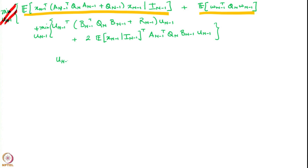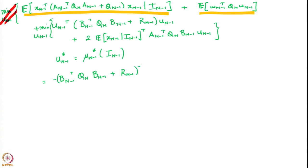That gives us that the optimal u_(n-1), let us call that u_(n-1)*, is a function mu_(n-1)* of the information i_(n-1), and is given by the negative of (B_(n-1)^T Q_n B_(n-1) + R_(n-1)) inverse times B_(n-1)^T Q_n A_(n-1) times the conditional expectation of x_(n-1) given i_(n-1).